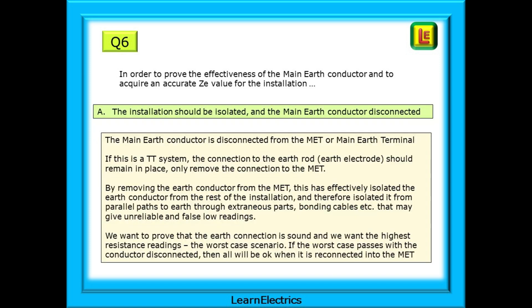The answer choice is A. The installation should be isolated and the main earth conductor disconnected from the MET or main earth terminal. If this is a TT system, the connection to the earth rod or earth electrode should remain in place, only remove the connection to the MET.